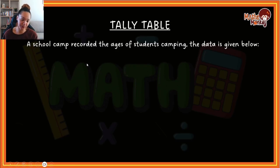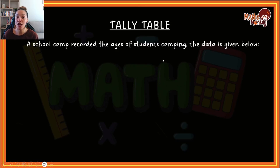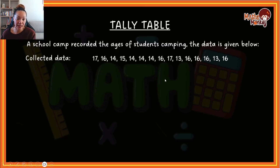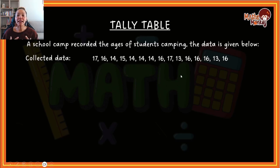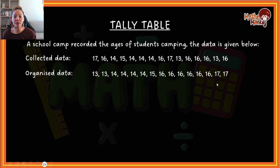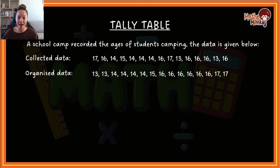Let's start with the tally table. A nice way to explain this is by showing you and doing an example with you. A school camp recorded the ages of the students camping — that is the data given. The first thing that makes this easy is if you organize the data in ascending order. Once you have it in ascending order, it's easy to see how many of each value you actually have, because a tally table essentially counts how many of a specific value you have in a data set.